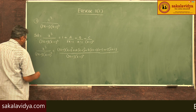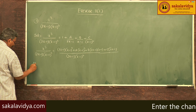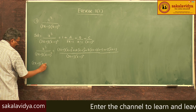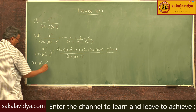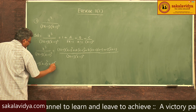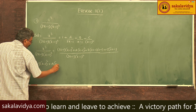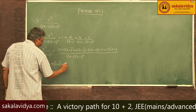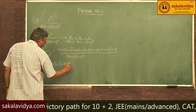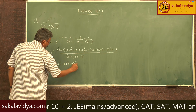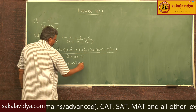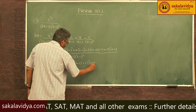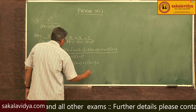After cancellation, (2x minus 1)(x minus 1) whole square plus A of (x minus 1) whole square plus B of (2x minus 1)(x minus 1) plus C of (2x minus 1) equals x cube.